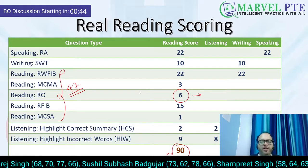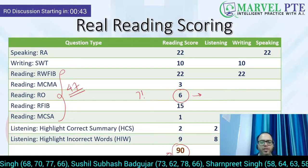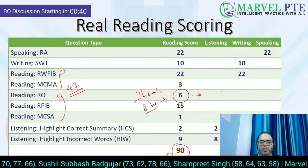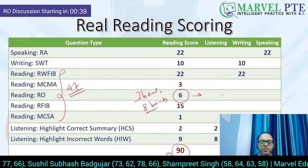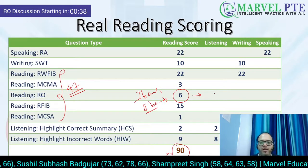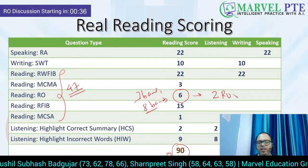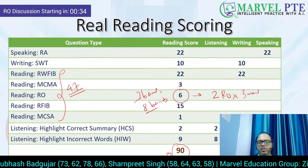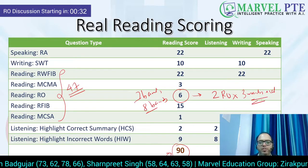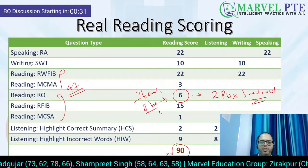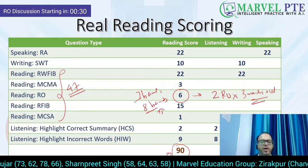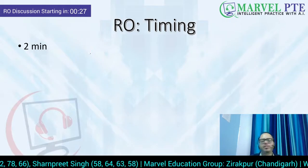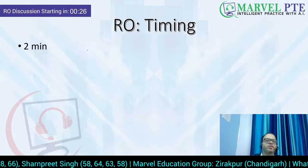Six marks out of the 47 are for reorder paragraph. So if your target is seven bands or eight bands, it's very important that you pay attention to reorder paragraph. If you are getting two reorder paragraphs, they will be three marks each — quite important especially if your target is eight bands.